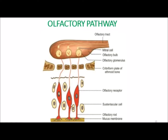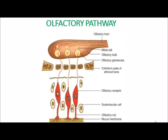The olfactory receptor cell is actually a bipolar neuron. The dendrite of the neuron is short, but the expanded end of the dendrite is called the olfactory rod. From the rod, about 10 to 12 cilia arise, and this cilia is non-myelinated and projects to the surface of the mucous membrane.